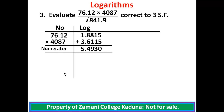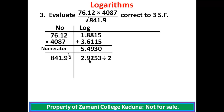The denominator is the square root of 841.9, expressed in index form as 841.9 raised to the power of half. The integer part of its logarithm is 2. Going to the logarithm tables, 84 under 1, differences of 9, gives 0.9253. Because of the fractional index, we divide by 2, giving 1.4627. Since a fraction means division, we subtract the denominator from the numerator.